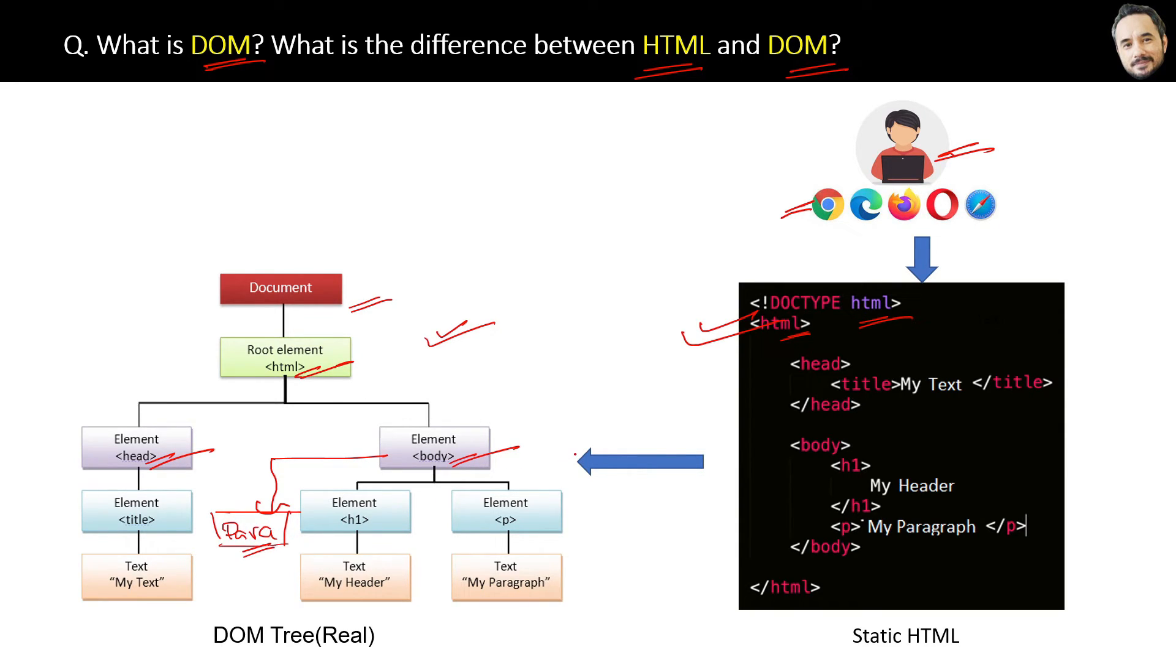Then this DOM tree will be converted back to HTML first, and that updated HTML will be displayed to the user. So in short, internally this DOM tree enables the user to update or add new elements in HTML. You can also say that DOM is like an interface to make your website dynamic with the help of JavaScript.